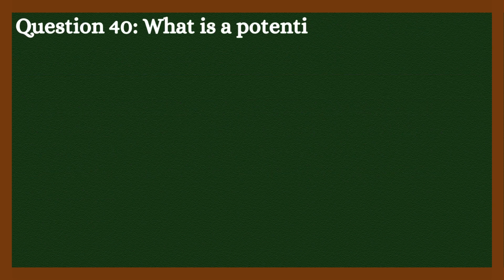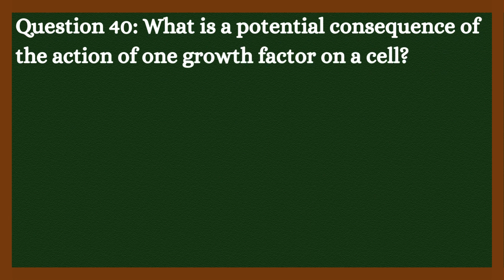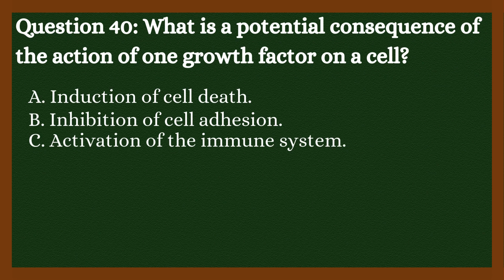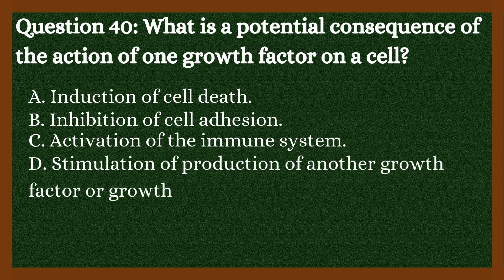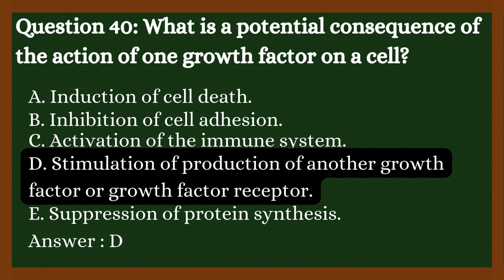Question 40: What is a potential consequence of the action of one growth factor on a cell? A. Induction of cell death. B. Inhibition of cell adhesion. C. Activation of the immune system. D. Stimulation of production of another growth factor or growth factor receptor. E. Suppression of protein synthesis. Answer is D. Stimulation of production of another growth factor or growth factor receptor.